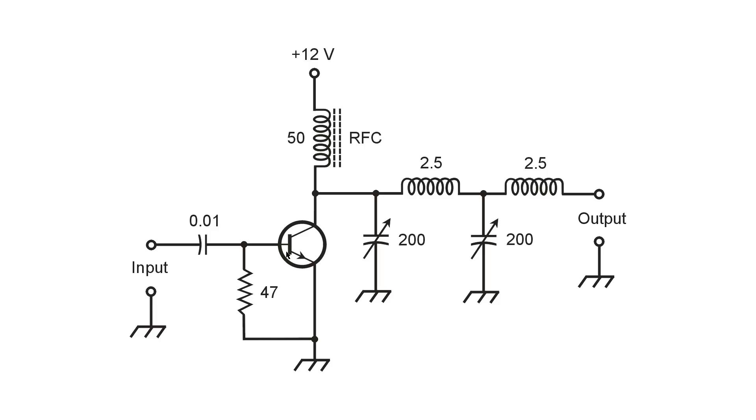Which is biased for class B, meaning that when we have the positive half of the cycle, we get conduction through the transistor from the emitter to the collector. That's electron flow from the emitter to the collector, and when we have a negative half of the cycle at the base, it's cut off.